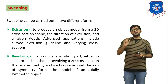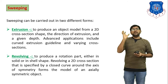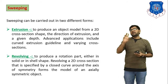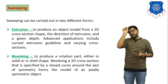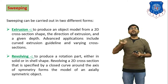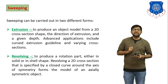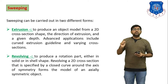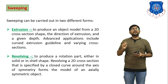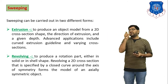Revolving means if we want to generate a circular object, we draw one cross section of that object and give it a 360-degree rotation about a particular axis to generate a 3D object — that is called revolving. For extrusion, the meaning is: to produce an object model from a 2D cross-section shape, with a given direction of extrusion and a given depth.